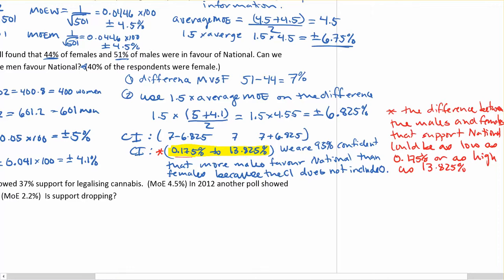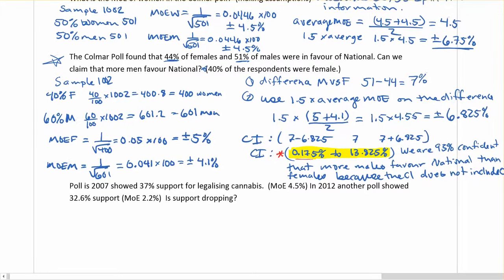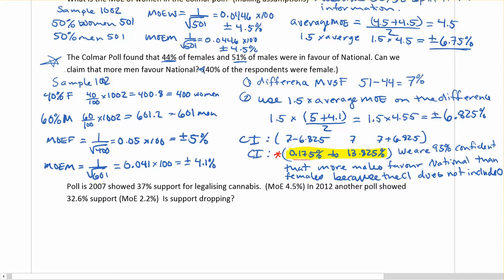And the best case scenario, or maybe the other worst case scenario, the two extremes, is the men lead by quite a bit, by almost 14%. So here, because we don't include zero, we can say that we do support that claim. That we are 95% confident that more males favor national than females, because the confidence interval does not include zero. So here we do support the claim.